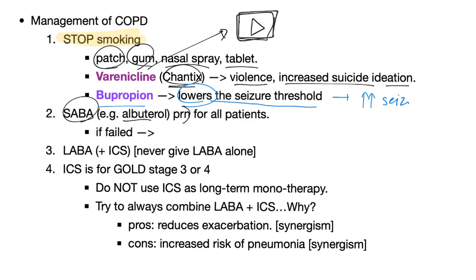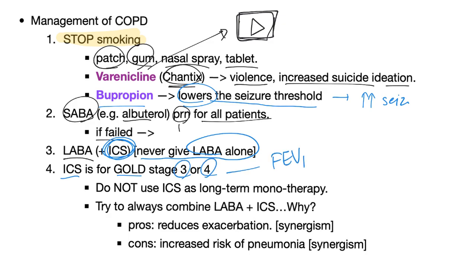Short-acting beta agonists such as albuterol, PRN — as needed — for all patients. If that fails, go to the next tier: long-acting beta agonists, and never give long-acting beta agonists alone — always combine them with inhaled corticosteroids. Inhaled corticosteroids are used for GOLD stage 3 and 4, based on FEV1, not the ratio.